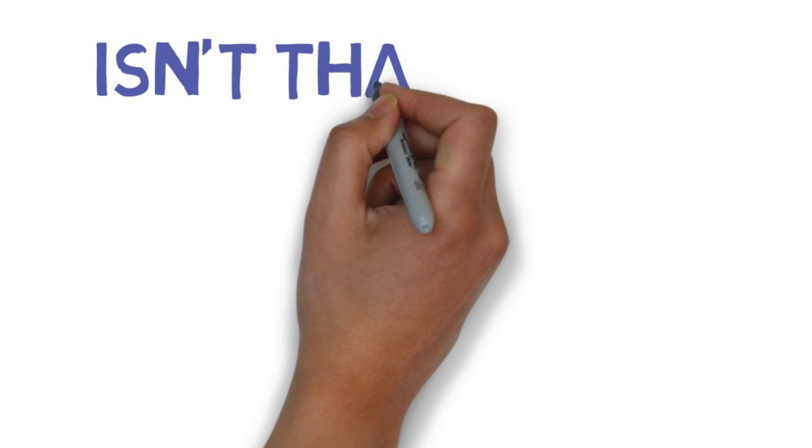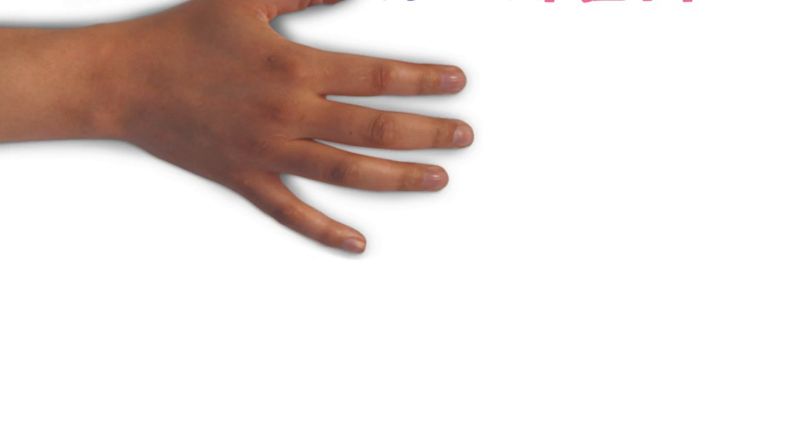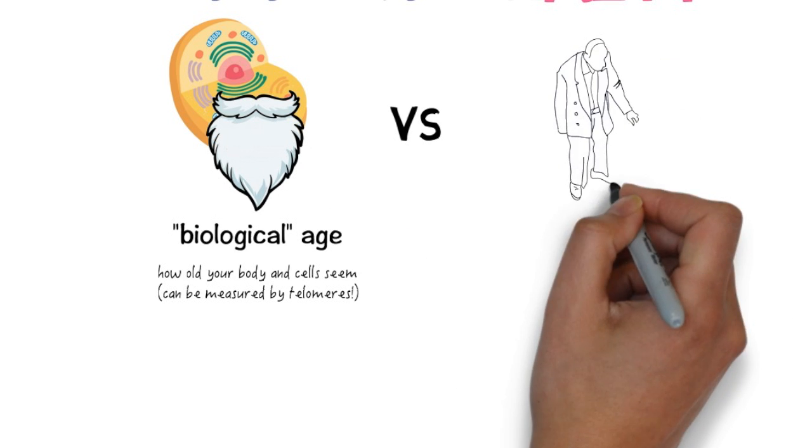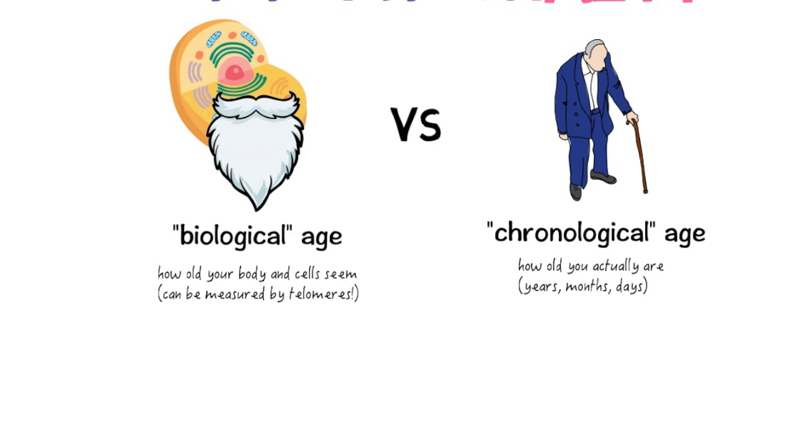Isn't that crazy? It suggests the concept of a biological age of your cells, rather than a traditional chronological age, and explains why immortality is not possible. Well, at least not yet.